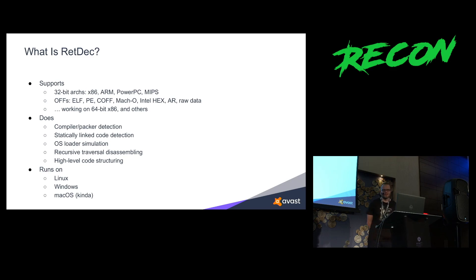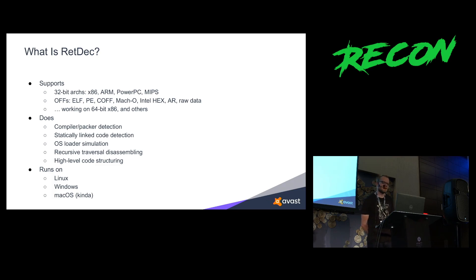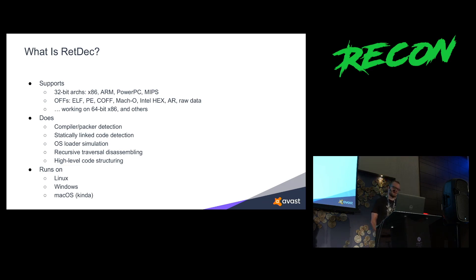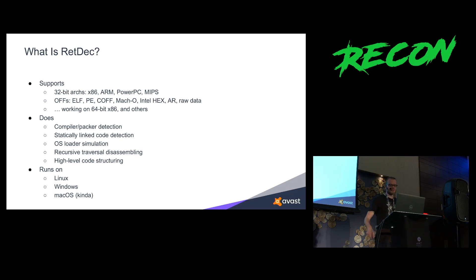What can it do right now? We can decompile for four architectures, only 32-bit at the moment — x86, ARM, PowerPC, and MIPS. We support a whole bunch of file formats, most of the major ones. We are working on 64-bit and actually started cooperation with a university student to work on this over the summer. But we still have a lot of quality problems in the output that we need to solve before pushing new features.